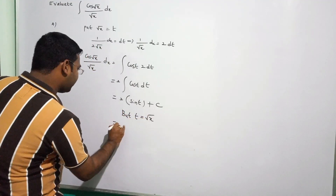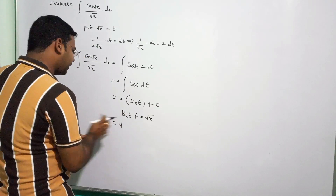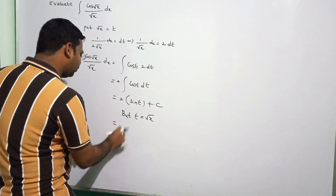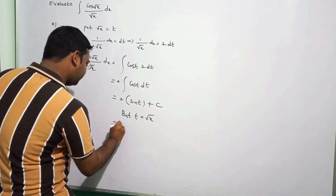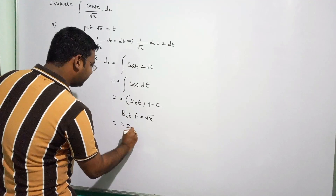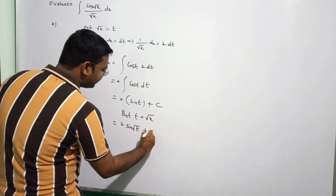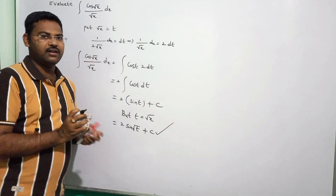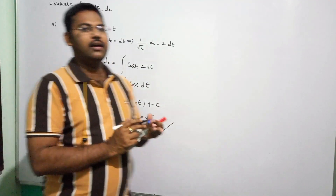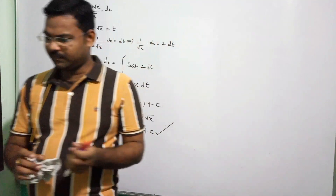Since t = √x, the final answer is 2·sin(√x) + c.